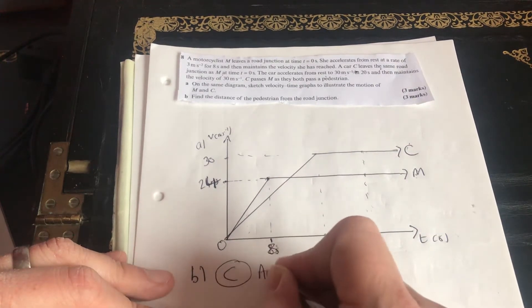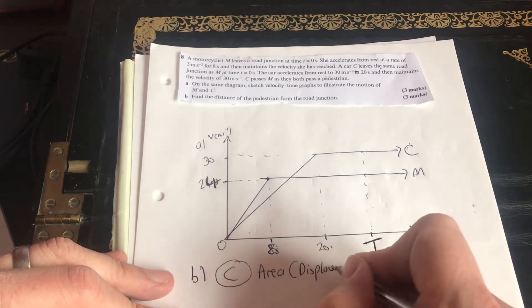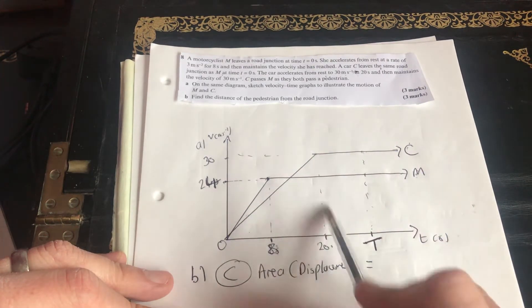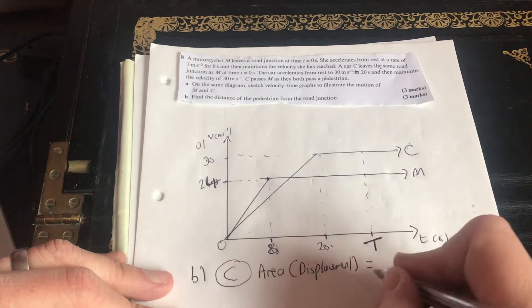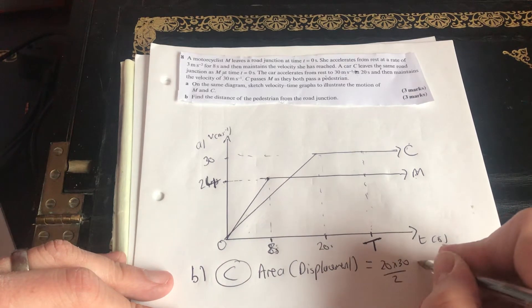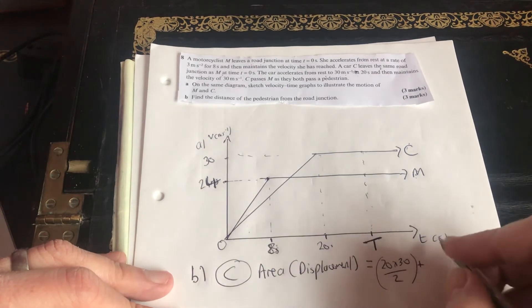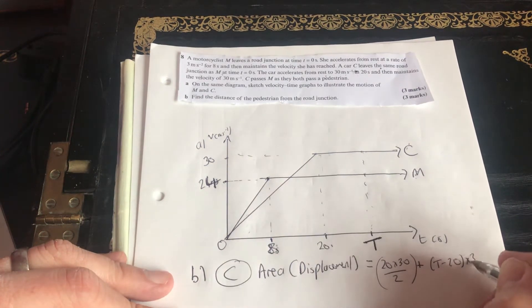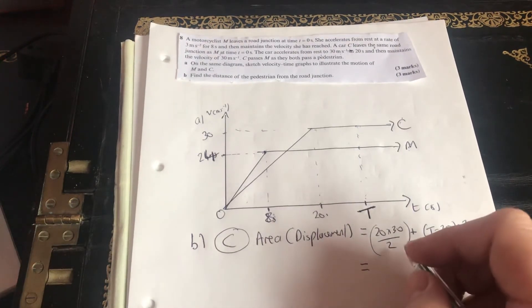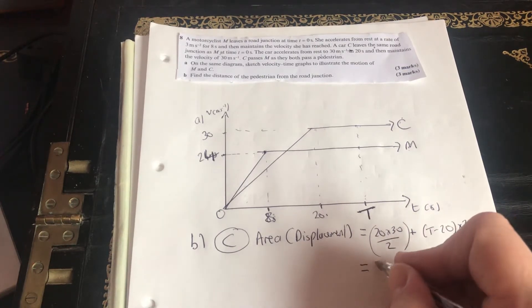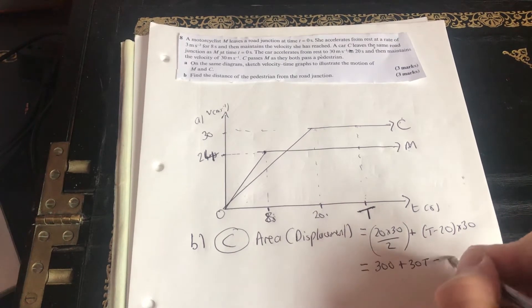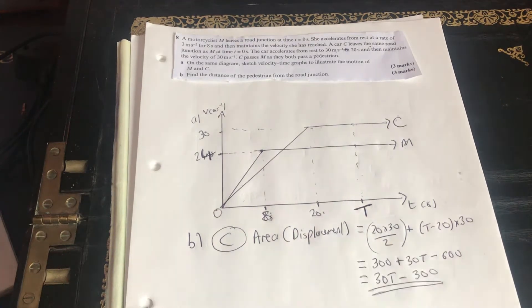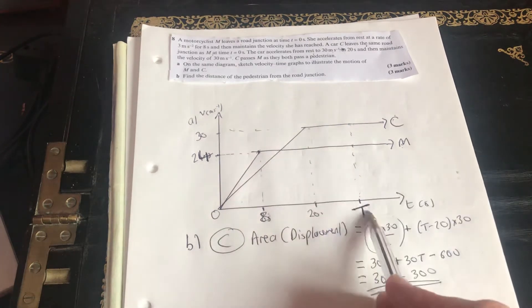So for C, the area or the displacement is going to be equal to, well, what do we have for the car? We've got this triangle here. If you look at that triangle, it's 20 times 30 over 2. So that's the triangle plus T minus 20 times 30. So what you would have there is 20 times 30 over 2 is 300 plus 30T minus 600, which would give you 30T minus 300. So that's the area of how far the car has travelled when we come up to this point T.